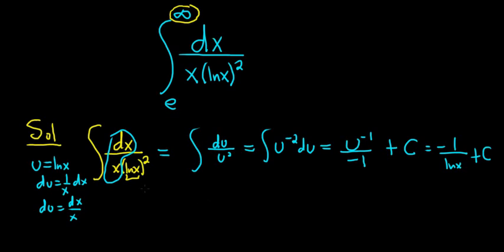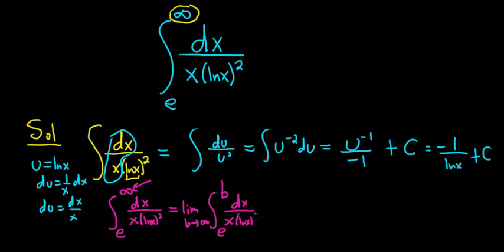So now let's go back and do the improper integral. So we have the improper integral from e to infinity of dx over x parentheses ln x squared. And what you do when you have an infinity is you replace it with a letter. So I like to use the letter b and then you let b approach infinity. That's the same thing as what we have here, right? So you replace the infinity with a letter and then you let b approach the infinity.